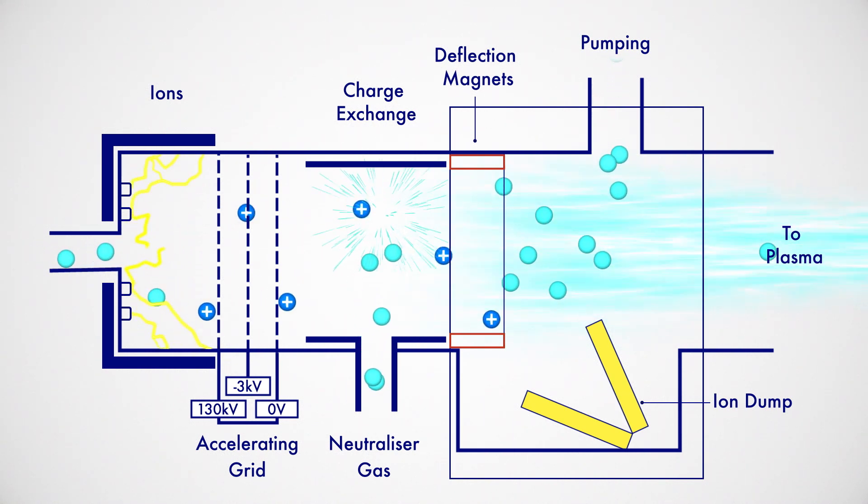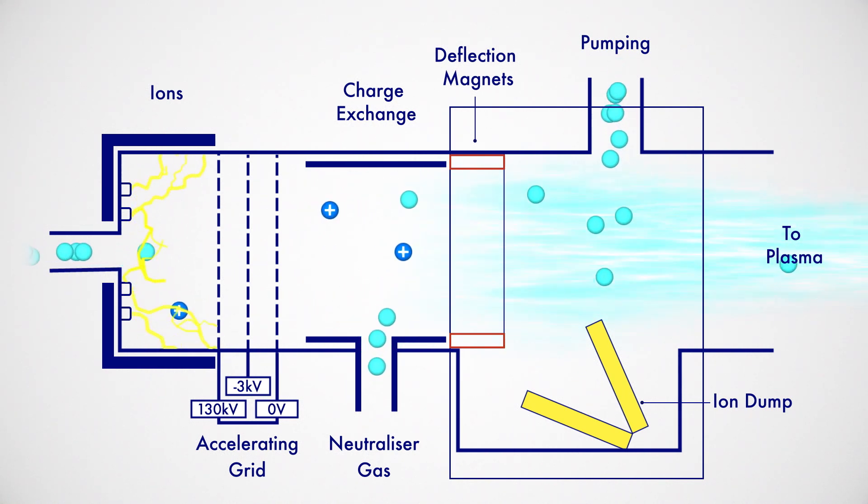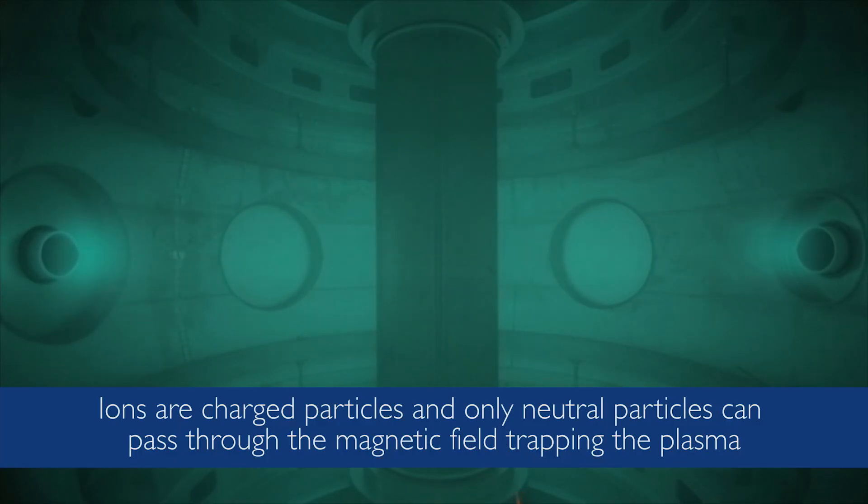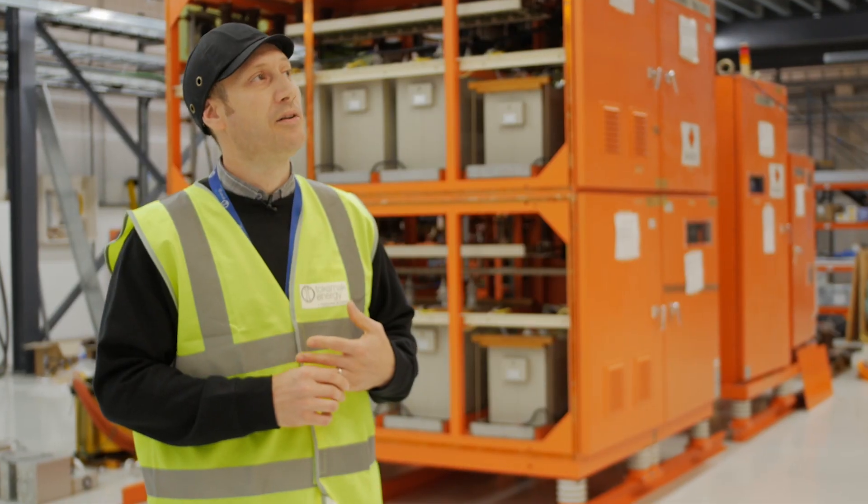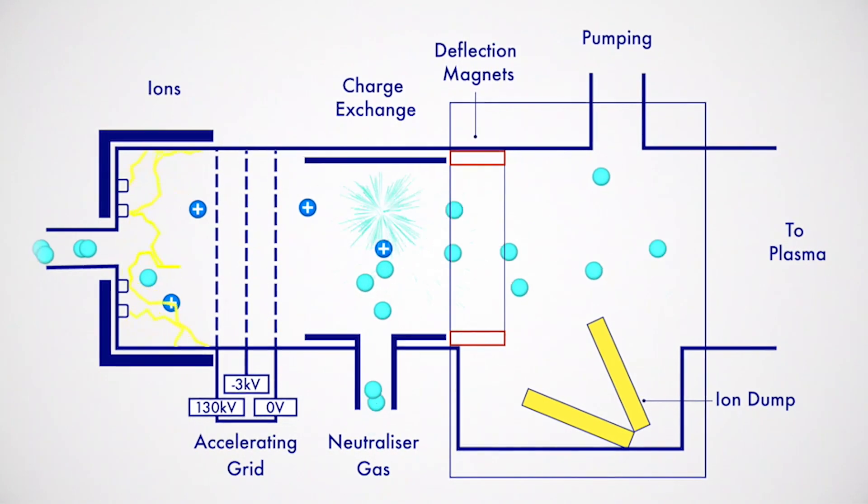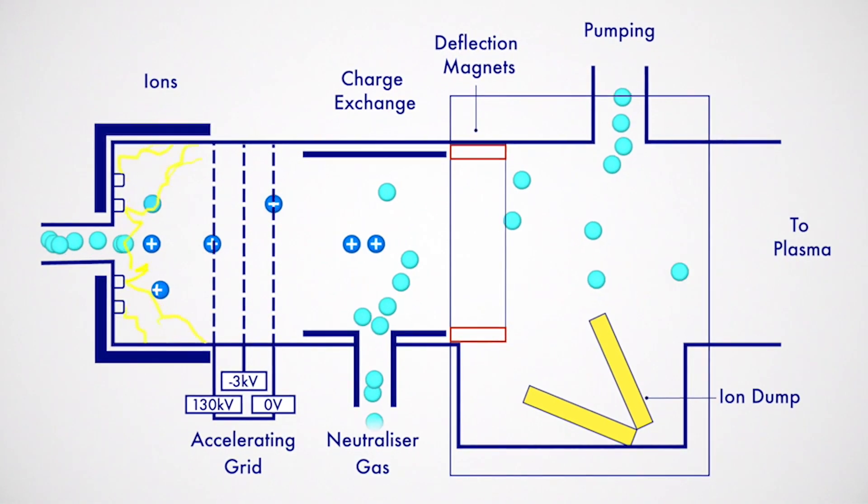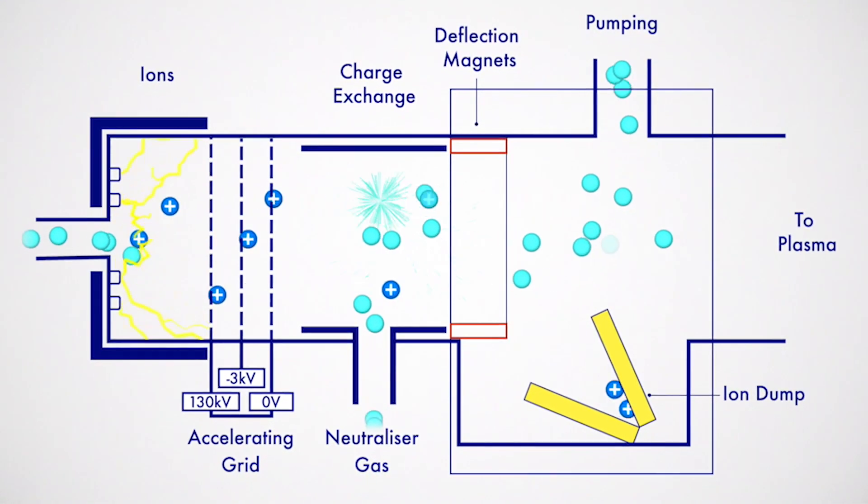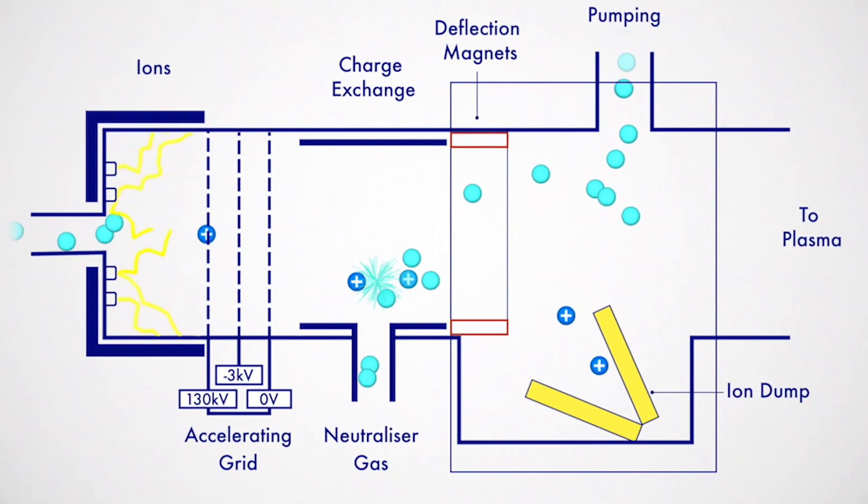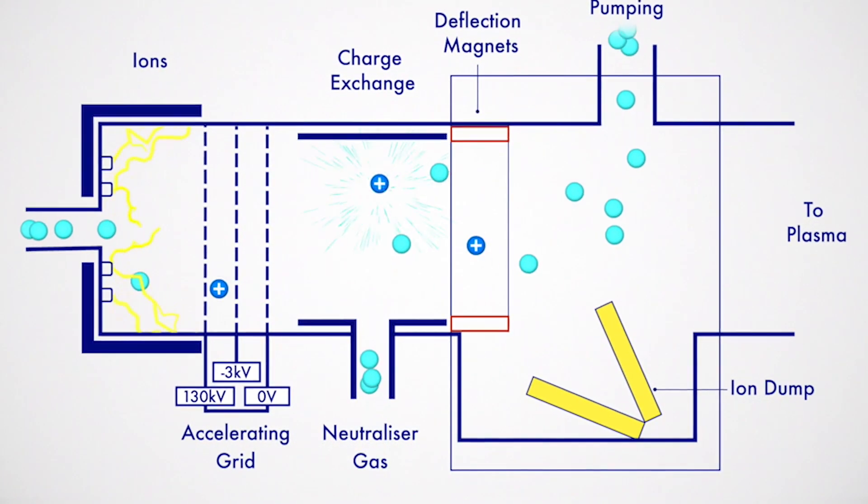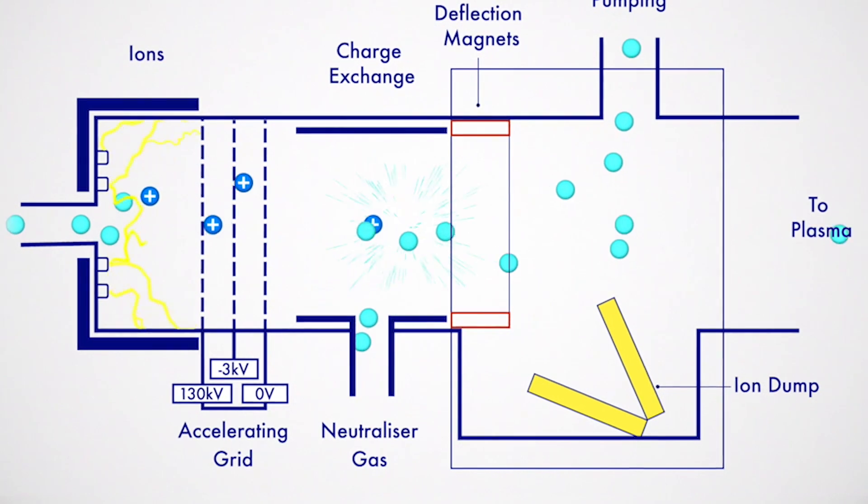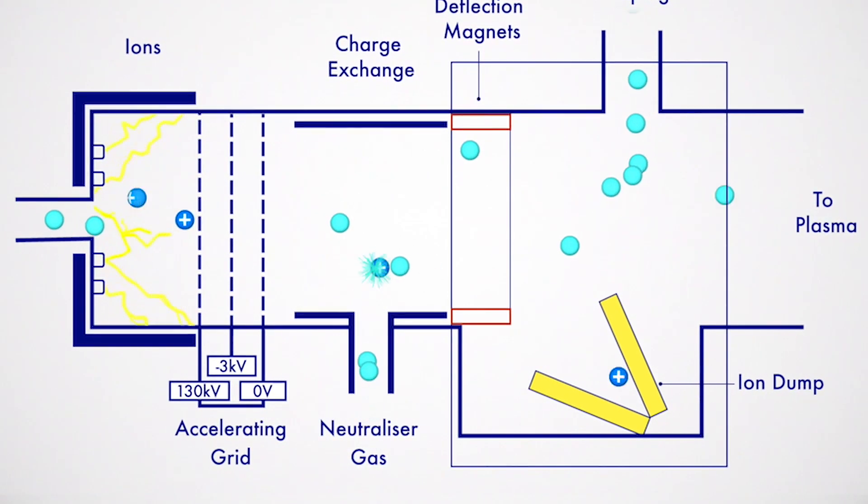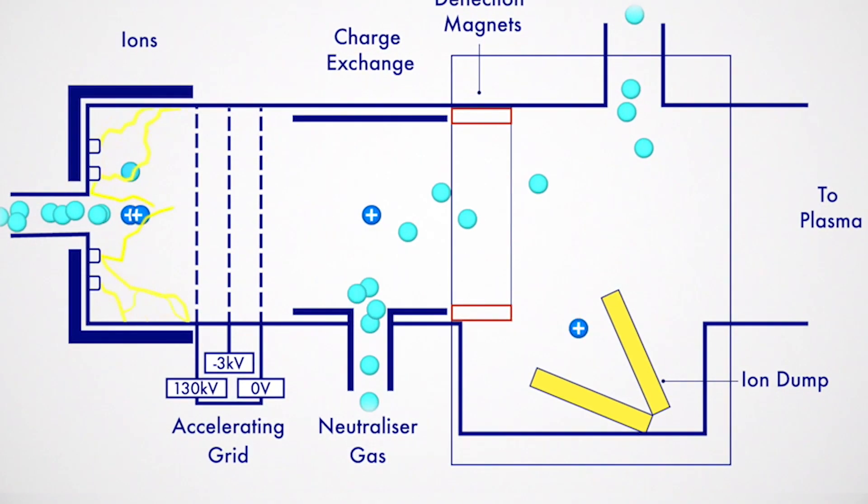Ions need neutralizing so they can get into the magnetic confinement of the plasma. The way they are neutralized is the ion source generates positively charged ions which are then passed through a cloud of gas which neutralizes some of the ions. The neutral ions can pass into the plasma and all the residual positive ions are dumped as wasted energy on the metal work around the ion source.